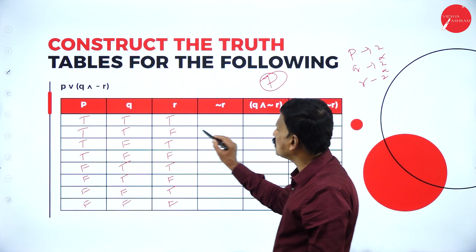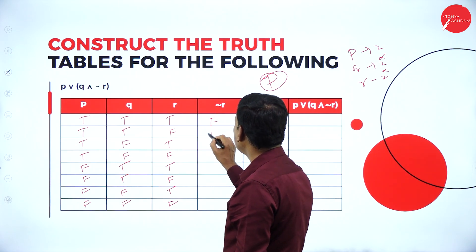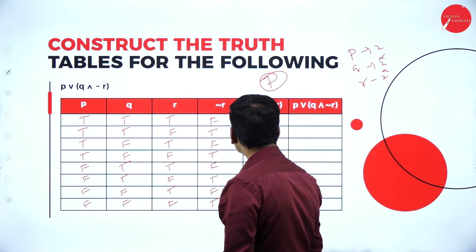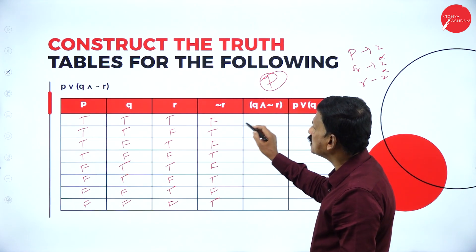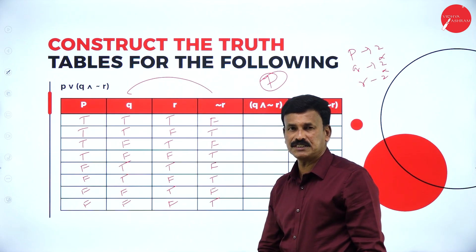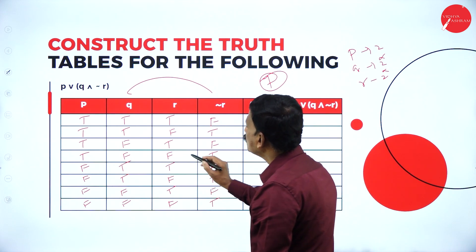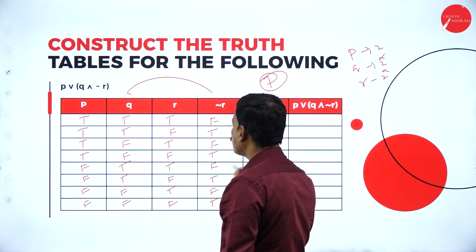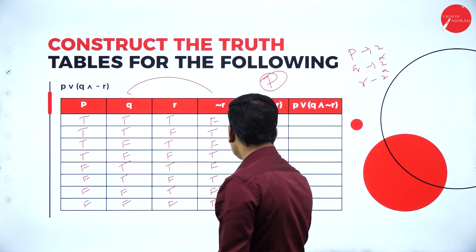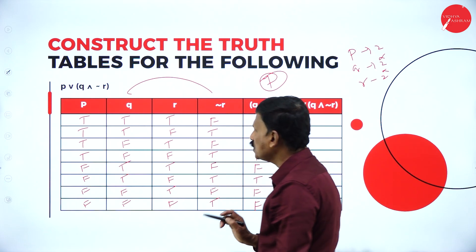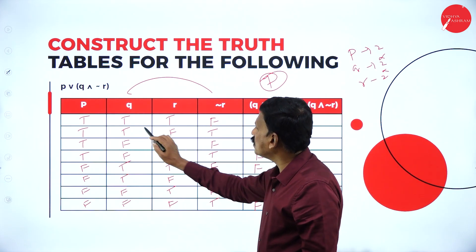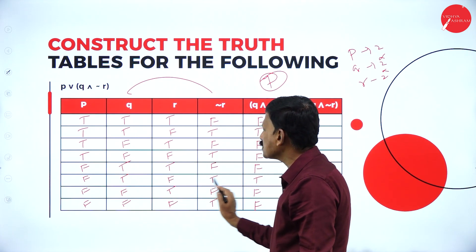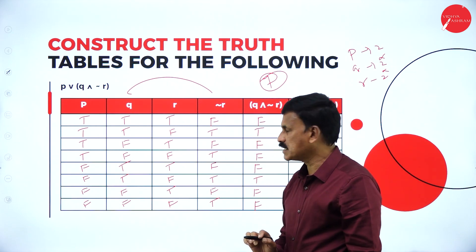Now write the conjunction for Q and negation R. Conjunction means true and true is true; in all other cases it is false. So: T∧F=F, T∧T=T, F∧F=F, F∧T=F, T∧F=F, T∧T=T, F∧F=F, F∧T=F. Only two entries are true — at rows 2 and 6.